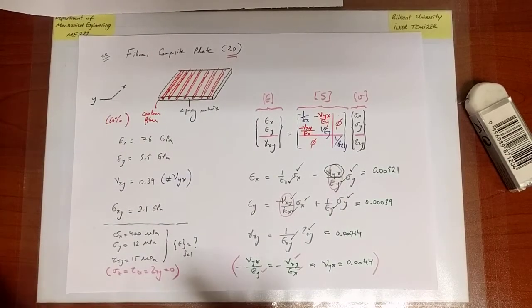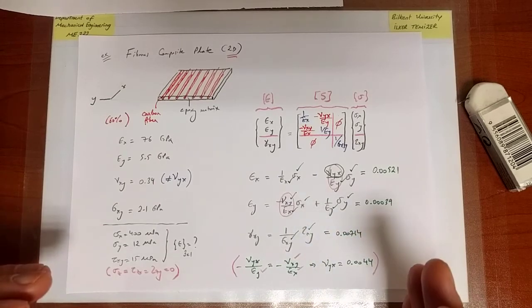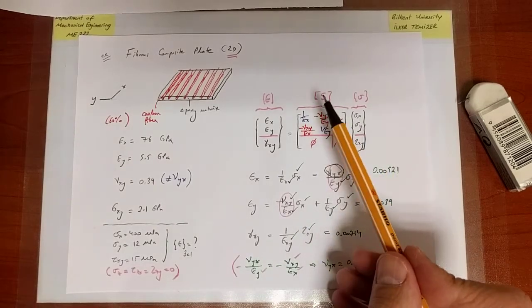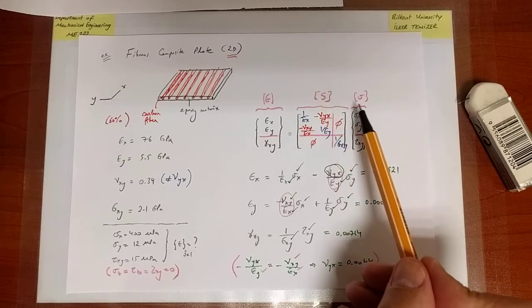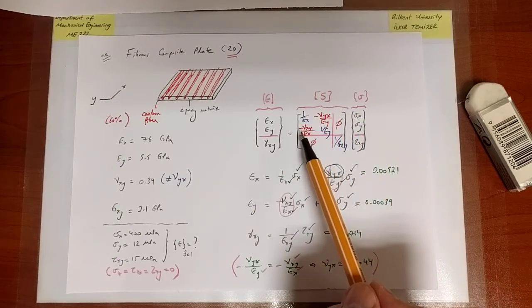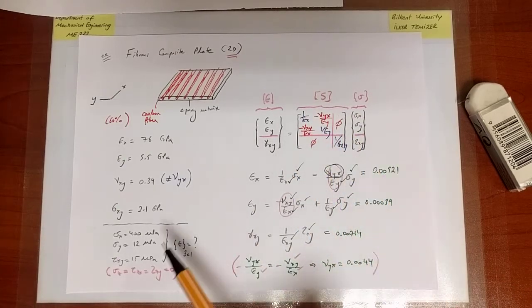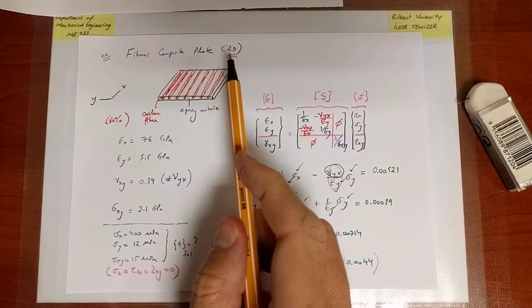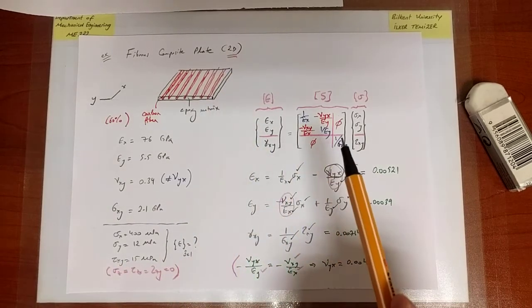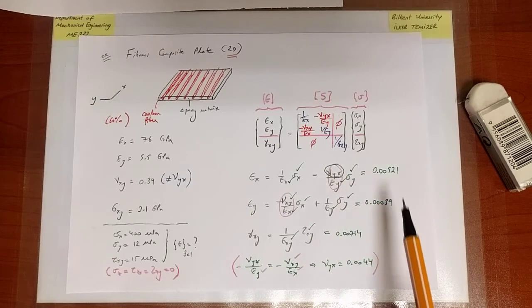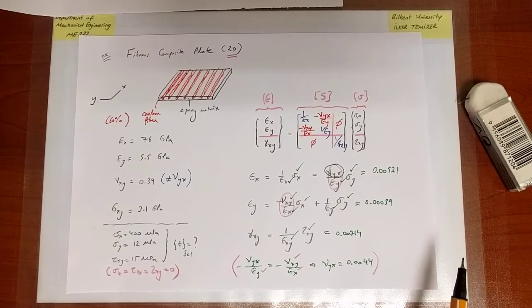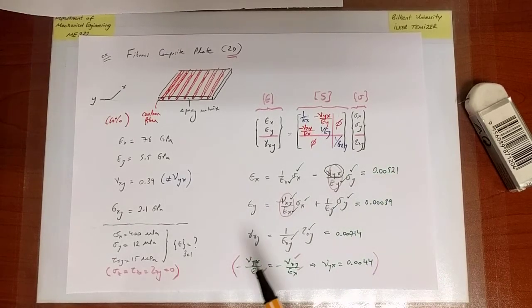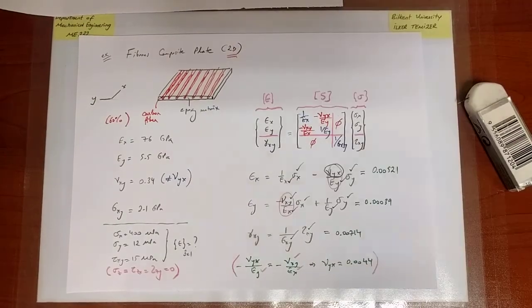Here what is important is to always keep in mind the form of the compliance matrix or to be able to deduce it from the more general form, making the appropriate simplifications towards our 2D setting. And then always remembering that it is symmetric and being able to make use of that information to complete the analysis.